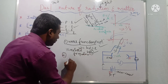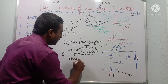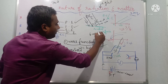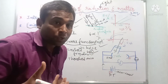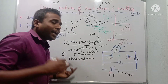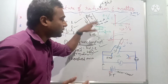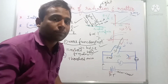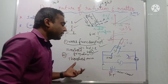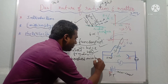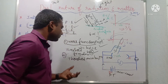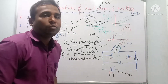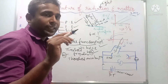Threshold wavelength: since frequency and wavelength are always inversely proportional to each other, the maximum wavelength to be given to the metal surface above which photoelectric emission takes place is called the threshold wavelength.